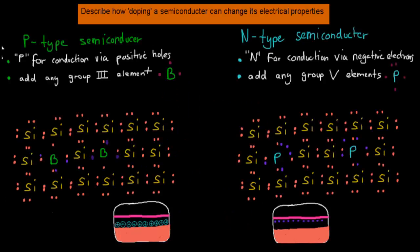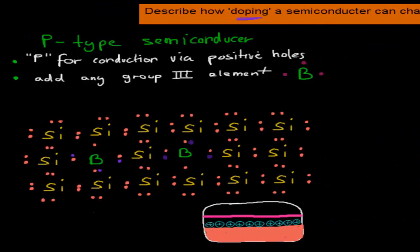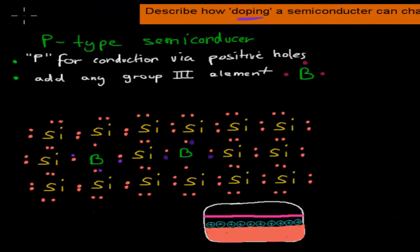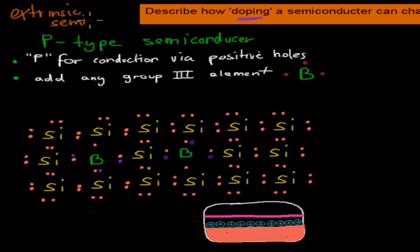That's what this dot point is all about: describe how doping a semiconductor can change its electrical properties. We just talked about the intrinsic semiconductor — that's when we add something to it, so we have not just silicon or germanium but something else as well. There are two different types we need to know about: the p-type and the n-type.